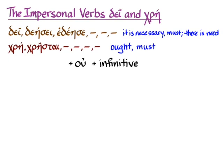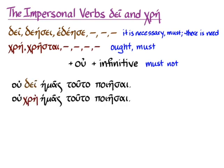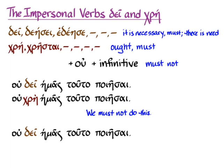If you have a negative with these two verbs, what you usually mean is 'must not.' So οὐ δεῖ ἡμᾶς ταῦτα ποιῆσαι or οὐ χρή ἡμᾶς ταῦτα ποιῆσαι both mean 'we must not do this.' But depending on your context and style of English, οὐ δεῖ ἡμᾶς ταῦτα ποιῆσαι could also mean 'there is no need for us to do this,' since δεῖ contains the idea of something lacking — that there's a need of something.